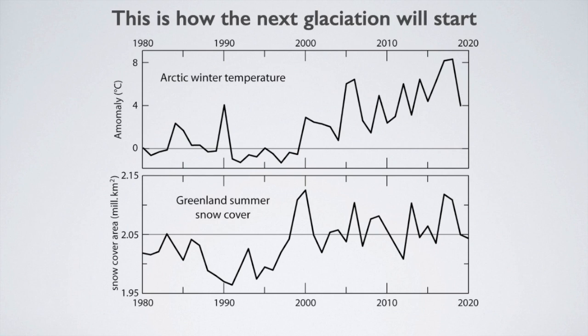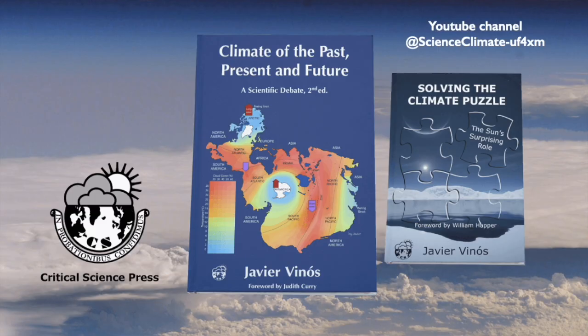What we see in this figure is the same thing that makes Milanković's theory work. Our interglacial has at least 1,000 years left. But the idea that we can stop the next glaciation by emitting CO2 will not work. If you like climate science and want to know more, you can buy my books available at Amazon and other internet stores, and subscribe to my YouTube channel.